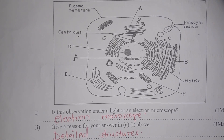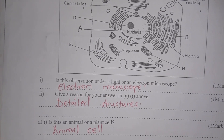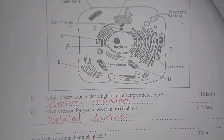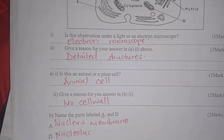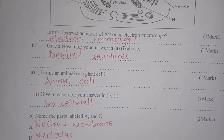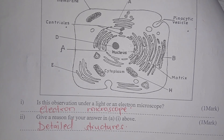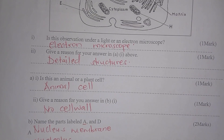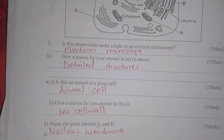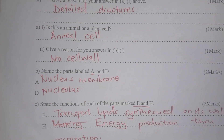Is this an animal or a plant cell? It is an animal cell because it has a cell membrane and there is an absence of a cell wall. Name parts A and D: part A represents the nuclear membrane and part D represents the nucleus.